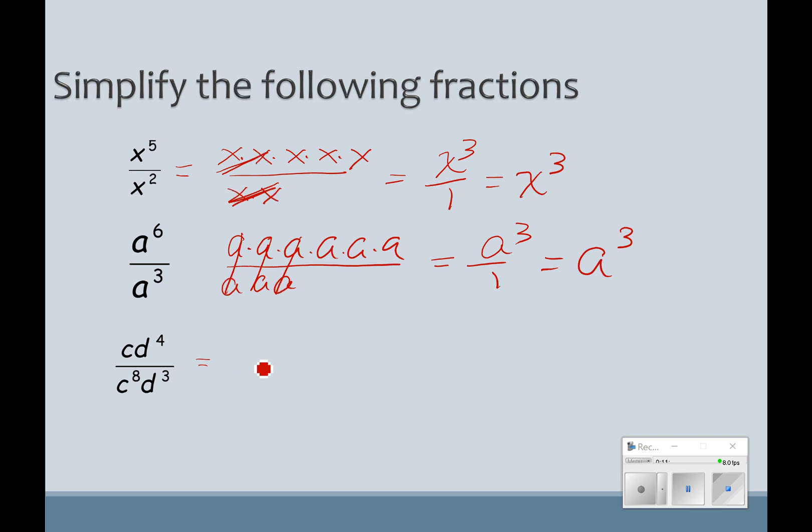X to the 5th over x squared, I have 5 x's. And then I've got 2 x's in the denominator. When I cancel out the things that are the same, this is going to leave me with x cubed over 1, or just x cubed. And with a to the 6th over a to the 3rd, I've got 6 a's. And then I have 3 a's. And they're just going to cancel out, because they're just equal to 1. And so this is a cubed over 1, or a cubed. Hopefully, you guys are thinking you're getting the idea with these. We're looking for some kind of pattern.